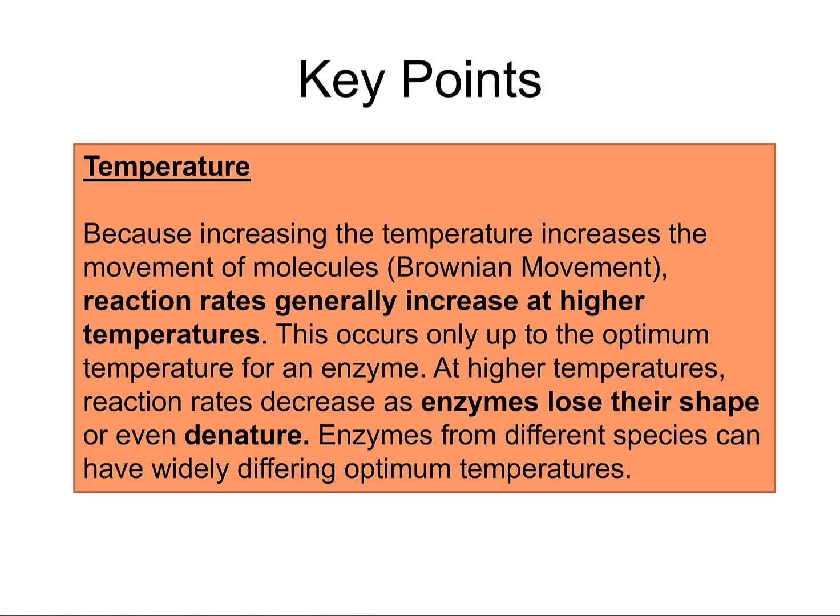Increasing temperature increases the movement of molecules — we call that Brownian movement. If you took a slide with water and some pepper and looked at it under a microscope, you could see the pepper particles shaking. If you applied a little heat and viewed it again, you would see the shaking increase at higher temperatures. All that's doing is moving things a little bit faster. If I shake it too much, the enzymes will be shaking in excess, lose their shape, and denature.